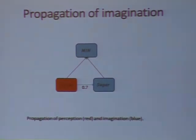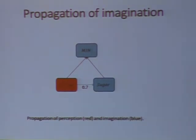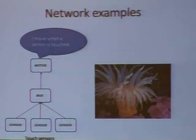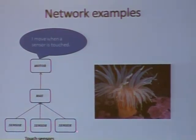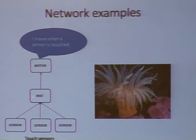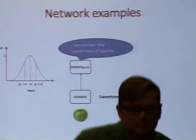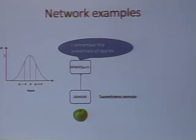The probability is 0.7 in this case. So we distinguish between the case of getting coffee and sugar, and the case of getting only coffee and imagining sugar, triggered by the coffee. Here's another network example: sensors down here, touch sensors like an anemone tentacle. It will register touch, and if it gets touched, it will retract using a motor. Here is another one with a space node.